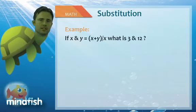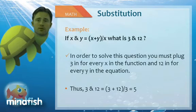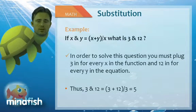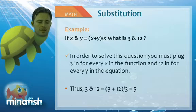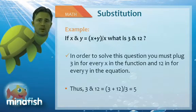What we're going to do is take out the x, substitute in a 3 for wherever we see it, and do the same thing with the y. Take out the y and substitute in 12. That will make 3 and 12 equal to 3 plus 12 divided by 3, or 5.